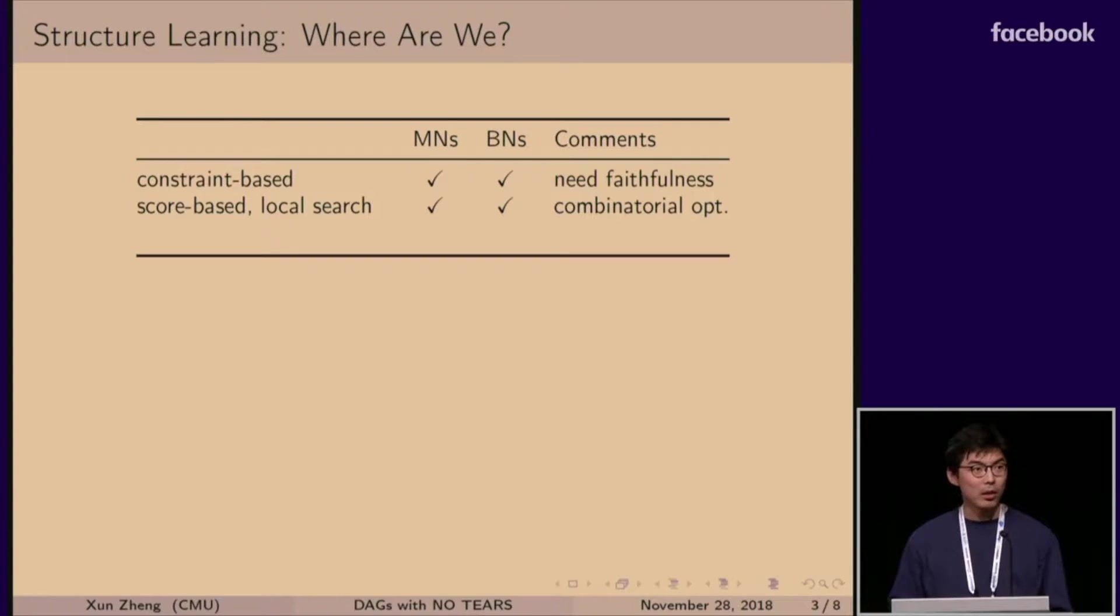And the second type of method is score-based learning, where you define a score function, and you're optimizing your graph over this score. And this can be further classified into two methods. One is local search, where you add or remove one edge at a time. And this has been done for both Markov networks and Bayesian networks. However, the very fact that we are doing local search is because we need to solve a combinatorial optimization problem using local heuristics.